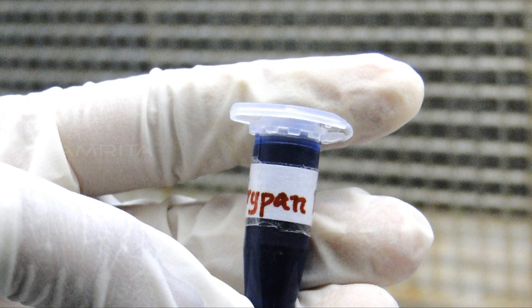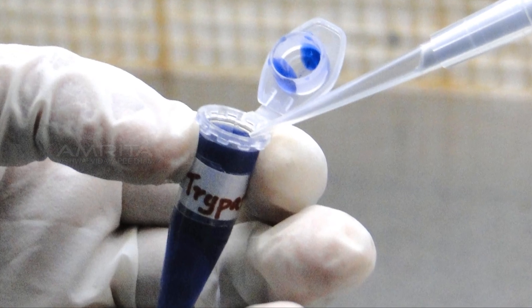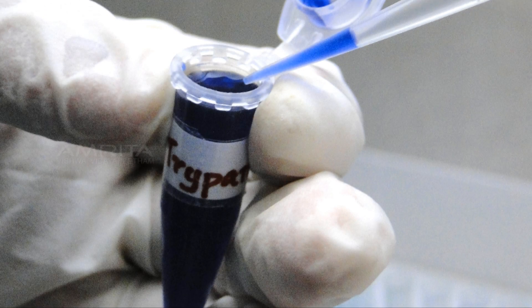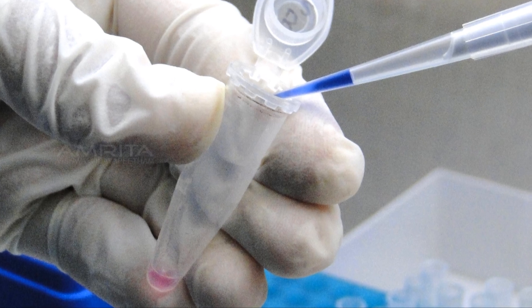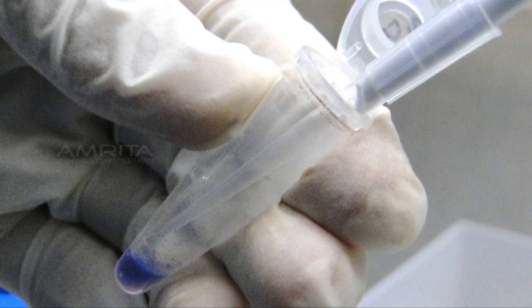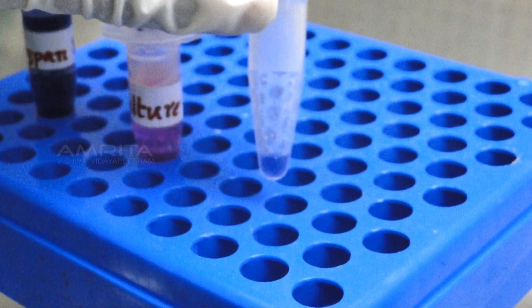Now take the vial containing trypan blue dye, open it and mix 2-3 times with the micro pipette. Take 10 microliters of trypan blue solution and transfer it to the vial containing 10 microliters of cell suspension. Mix the trypan blue cell suspension and keep the vials for 5-15 minutes.